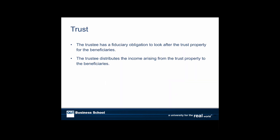One of the main things to recognise is that because the trustee owns this property for someone else, they have a fiduciary — a very special obligation — to look after that property for the beneficiaries. They can't look after themselves; they've got to look after the beneficiaries with this property. They distribute the income from the trust property to the beneficiaries, so they're running it to pay the beneficiaries.